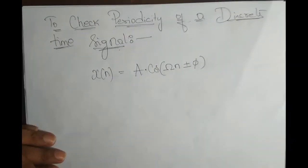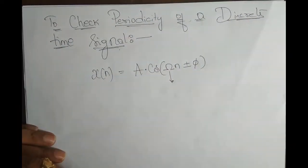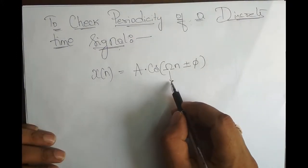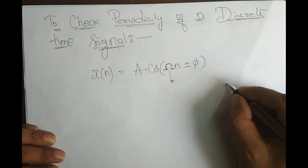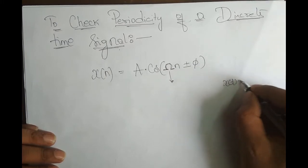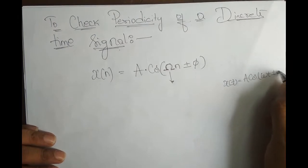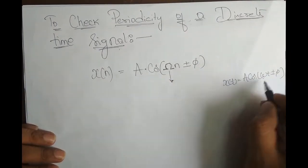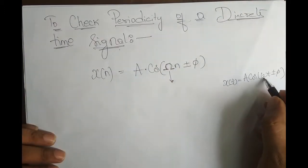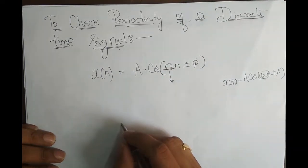This comes under the angle. Now, this omega is capital omega. Whenever we represent a discrete time signal, the omega changes. Unlike the continuous time signal where x of t equals A into cos of omega t plus or minus pi, here for continuous time signal the unit is radians per second, whereas for discrete time signal the unit is radians per sample.